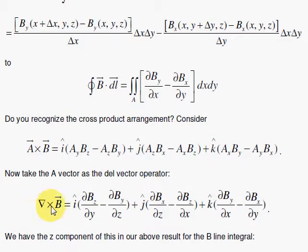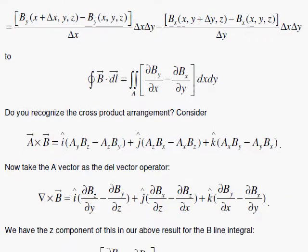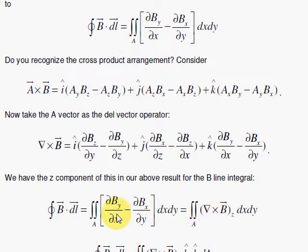And before we had the del dot, that was the divergence. So when we do this, we can see what's up there is the z component of the curl. So if we put the z component in, I can say del cross B, sub z, the z component.